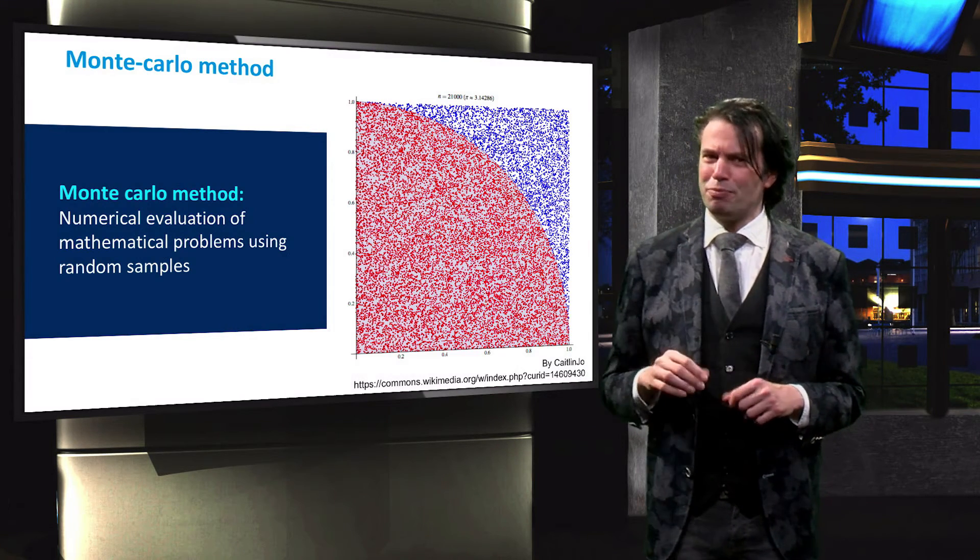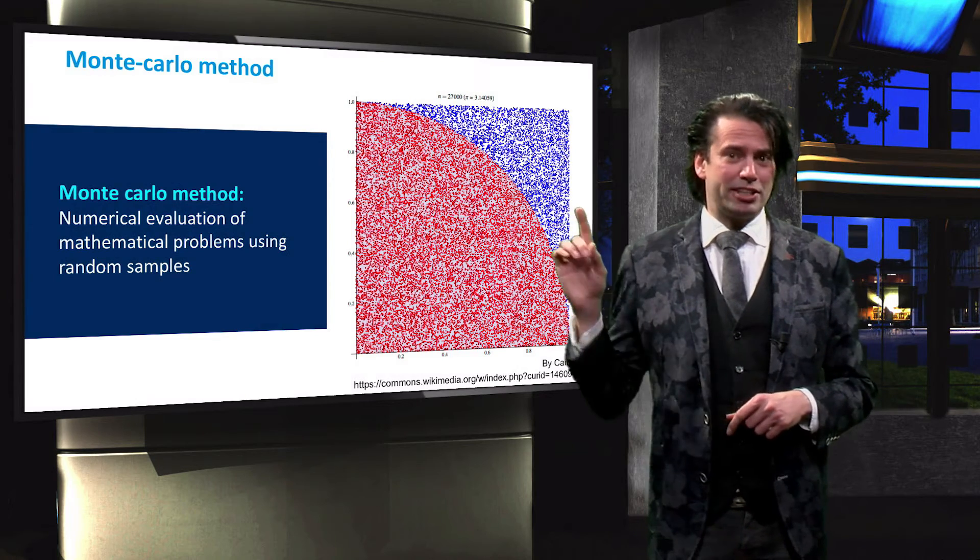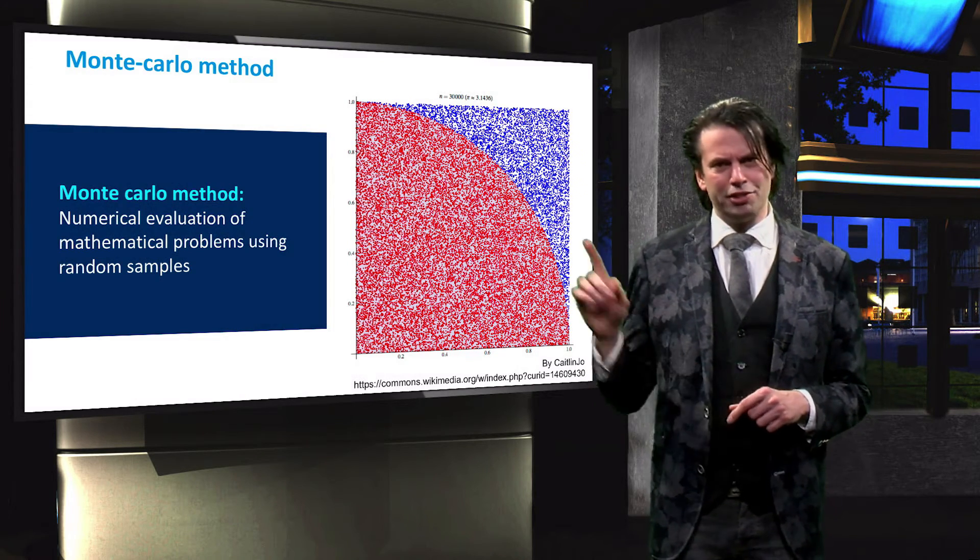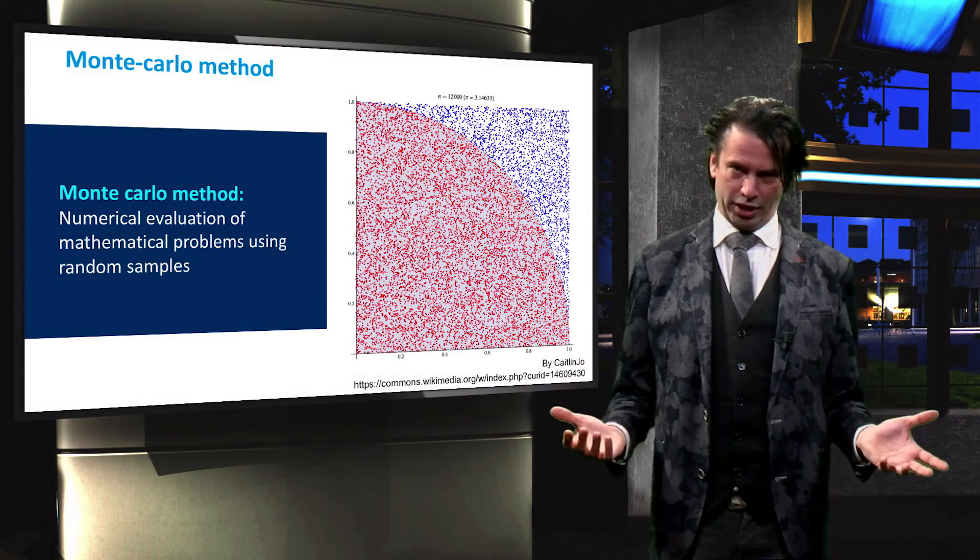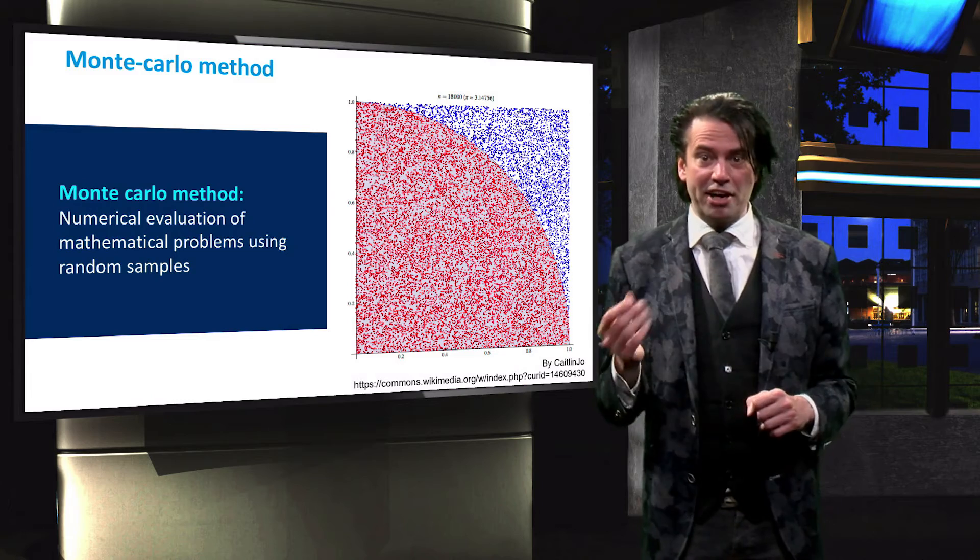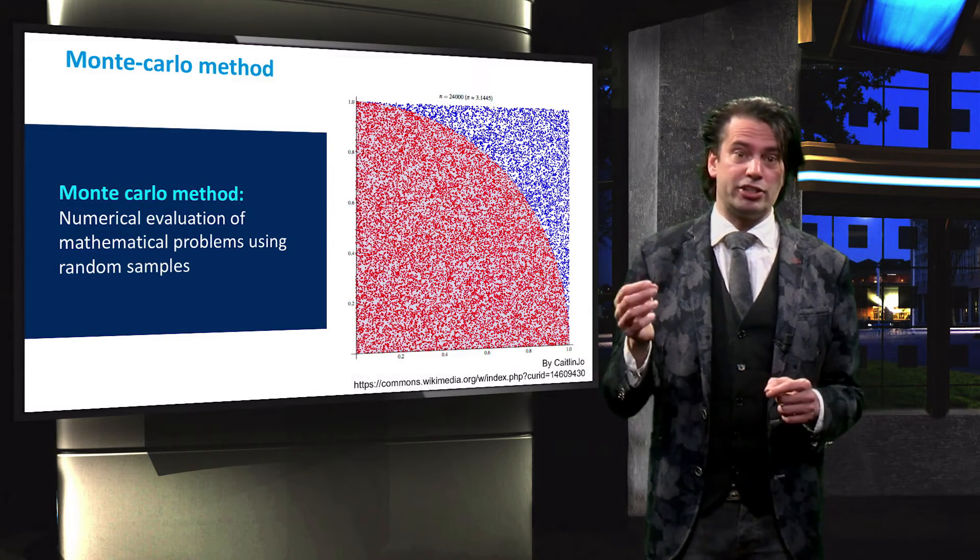A fine example of the Monte Carlo method is given by this approximation of the value of pi. This figure shows a circle inscribed in a square. The ratio of the areas of the circle and square is a quarter pi.